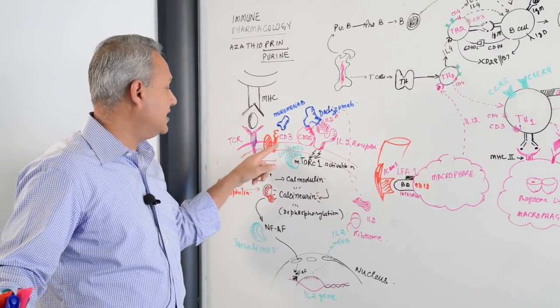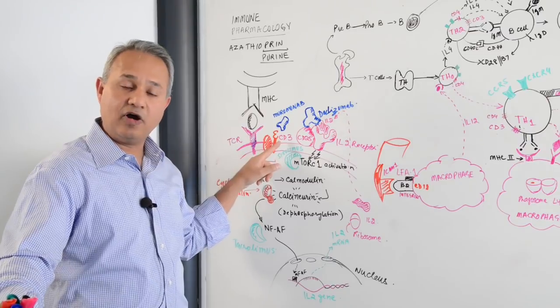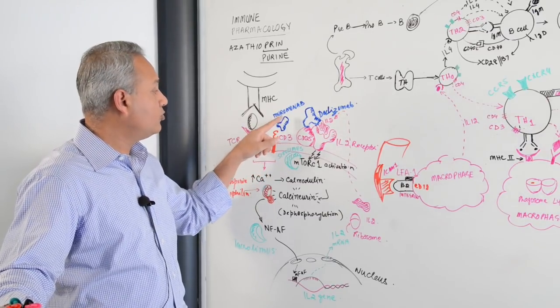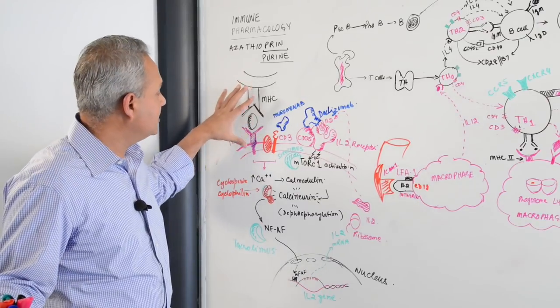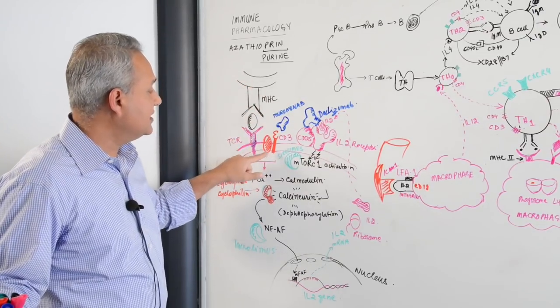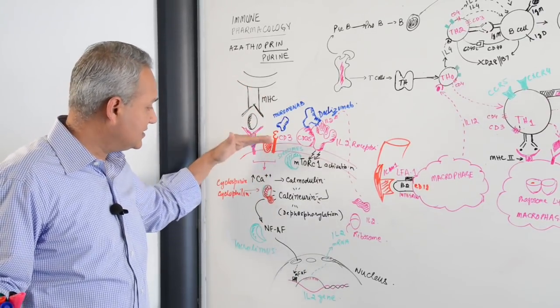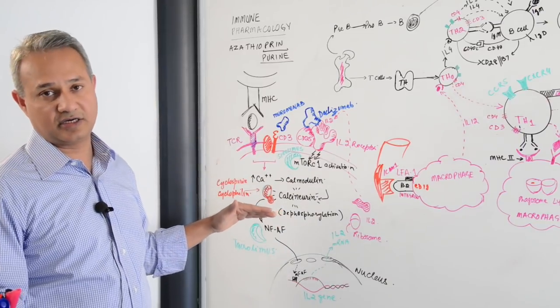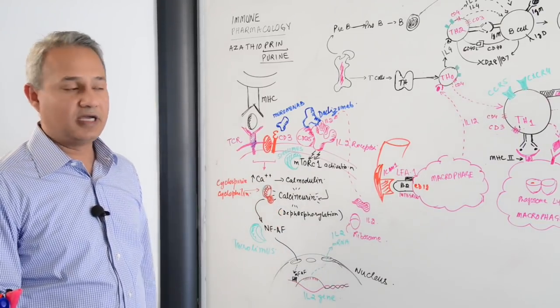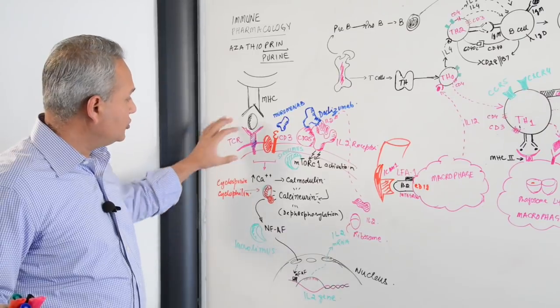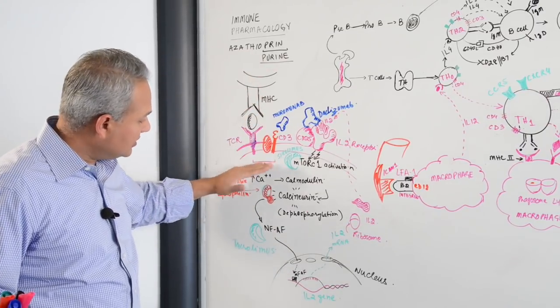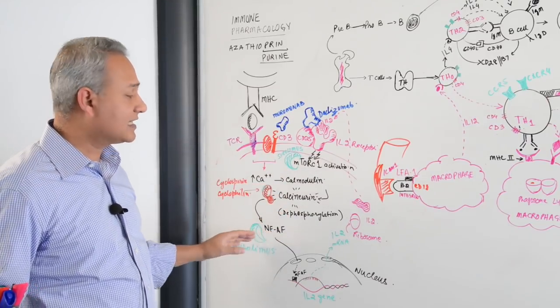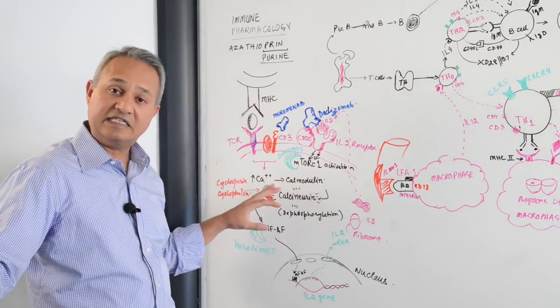This is a co-stimulatory signal complex. CD3 has an epsilon chain on it. Muromonab binds with that epsilon chain. So even when this complex is getting stimulated, CD3 will not get stimulated and the signal transduction will not occur. That is one way to block it. Another way to block is that you do not do anything to the signal transduction, let it happen, but once the signal reaches inside and various proteins are becoming activated, you block those proteins.